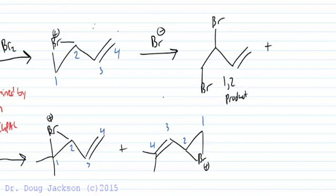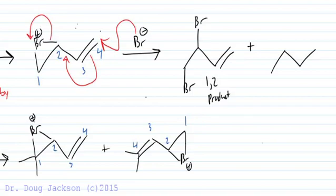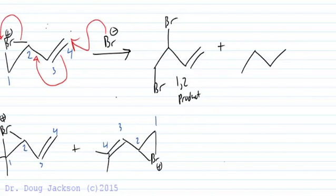And then the 1,4 product would actually add to the 4 position and we'll show this mechanism. Tax the carbon, double bond moves over, kicks off the bromine. So we get a long distance effect. Double bond moves. Bromine goes to the 4 position. 1,2,3,4 and then we have a bromine left over.